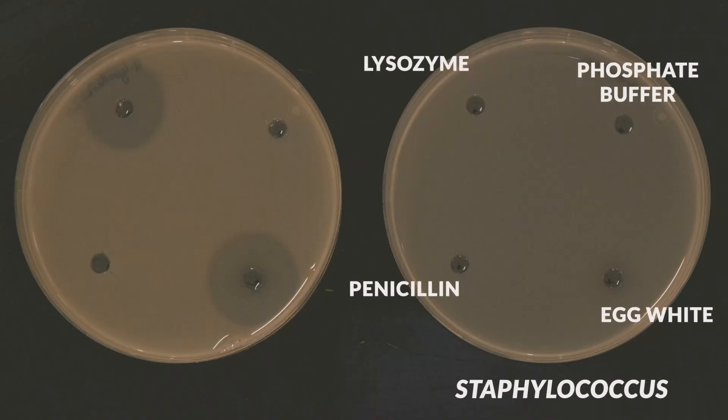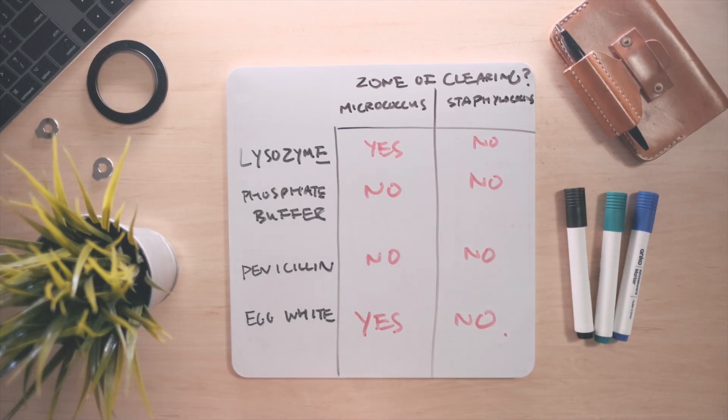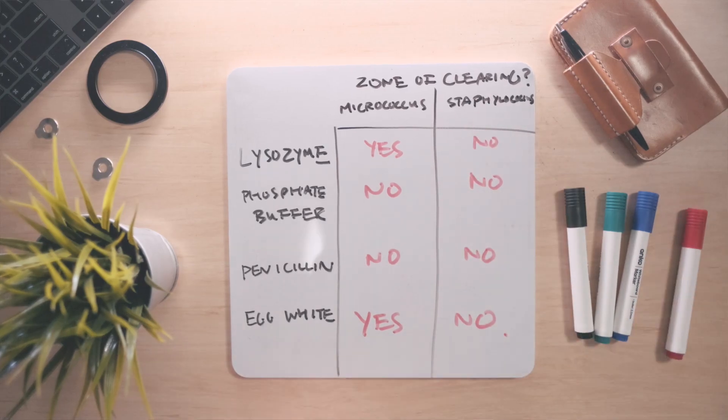But what about Staphylococcus? No zones of clearance are observed in any of the wells. This is due to the fact that Staphylococcus is resistant to lysozyme due to a modification of its peptidoglycan structure.